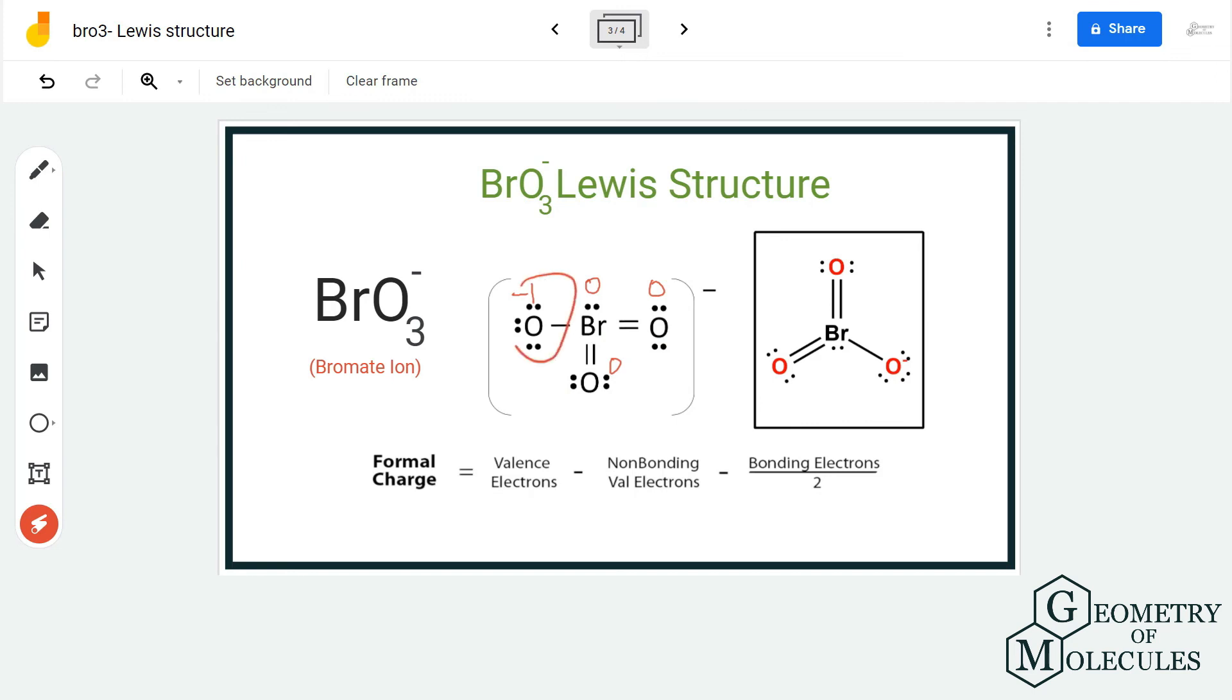So as this oxygen has a -1 charge, this is the charge we mention for the ion. The bromine atom and the two oxygen atoms forming double bonds have a charge of zero. I hope this video helps you understand the Lewis structure of bromide ion.